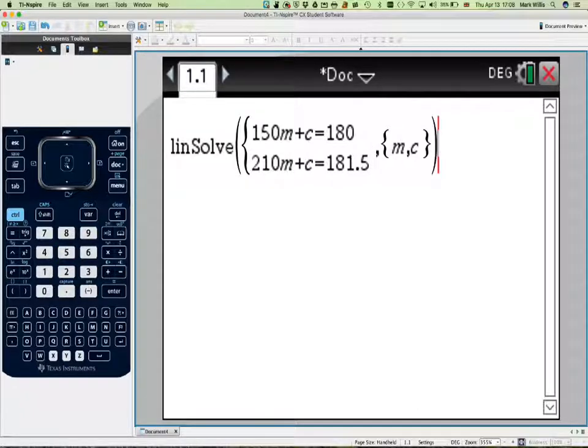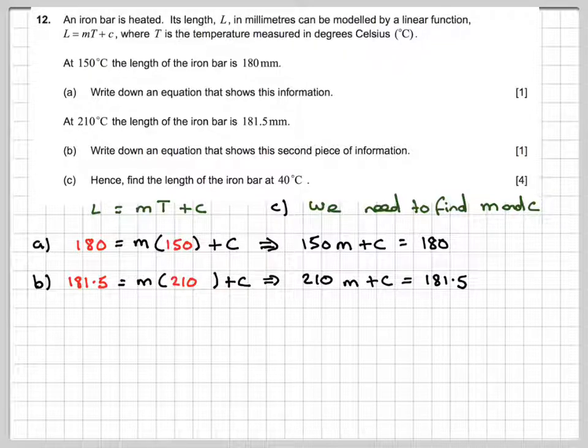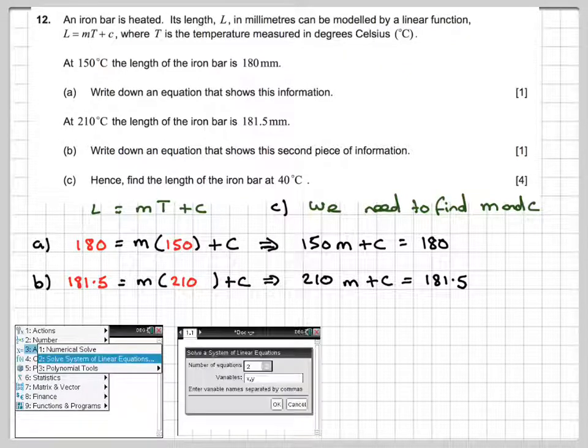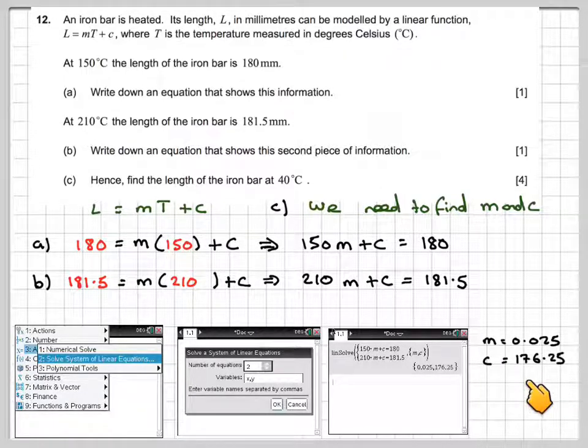Move the cursor to the end here, press Enter, and we get that m equals 0.025 and C equals 176.25. This is a simultaneous equation solver on the GDC. There's the screenshots for that. So we get that m equals 0.025 and C equals 176.25.